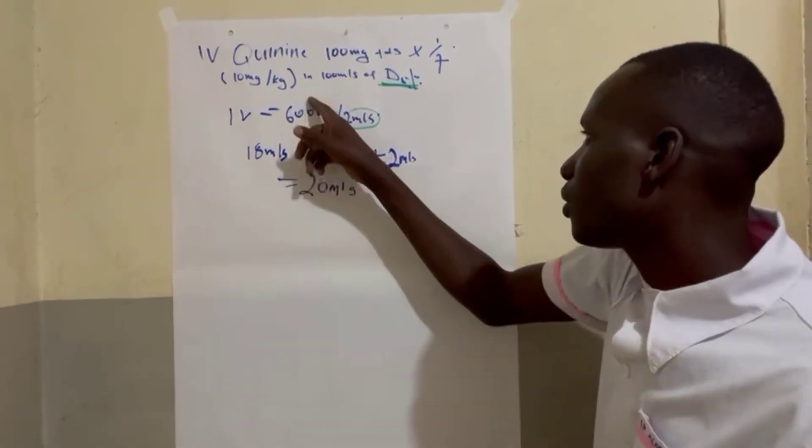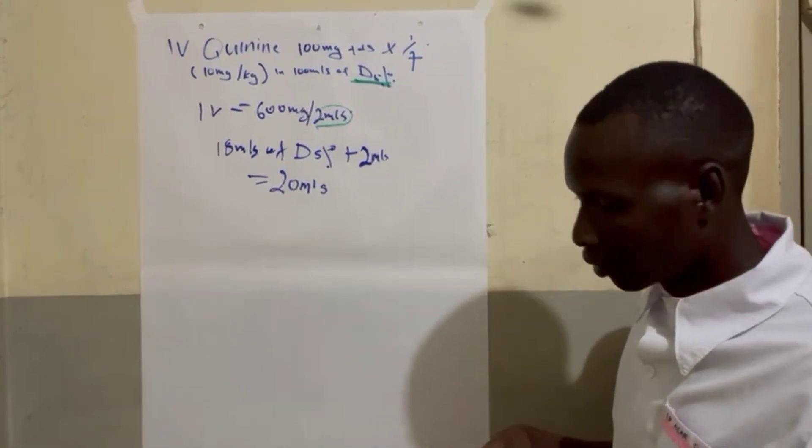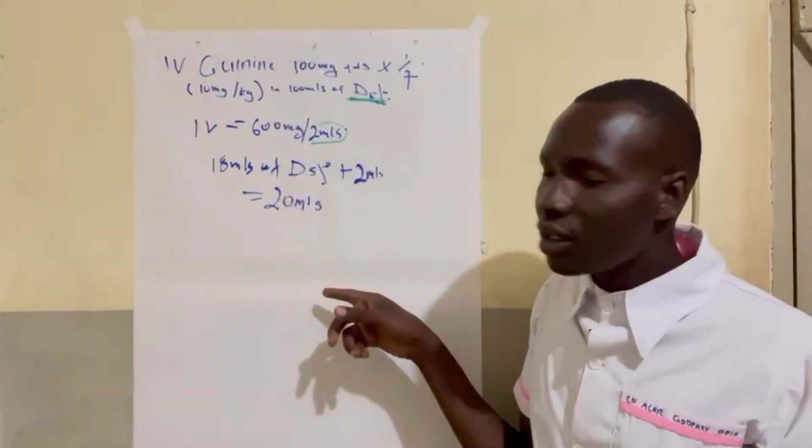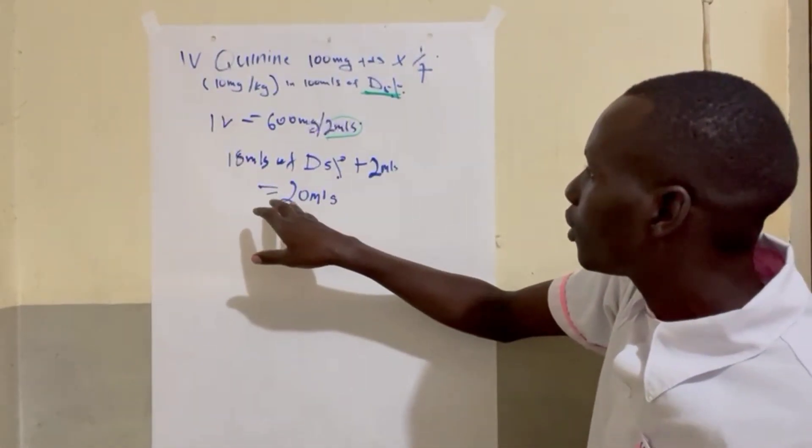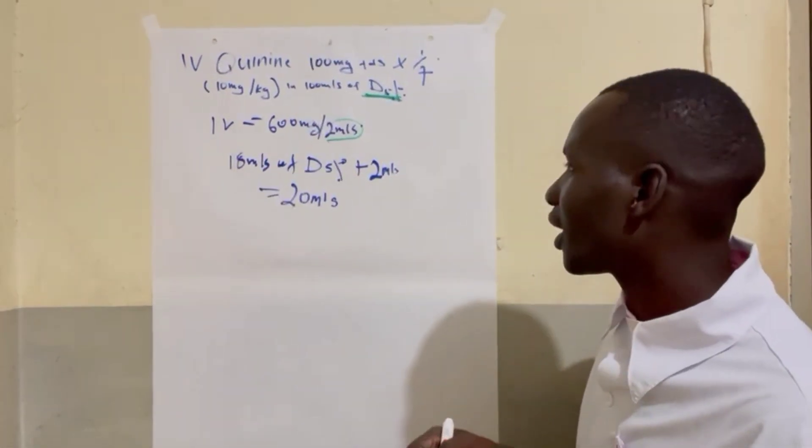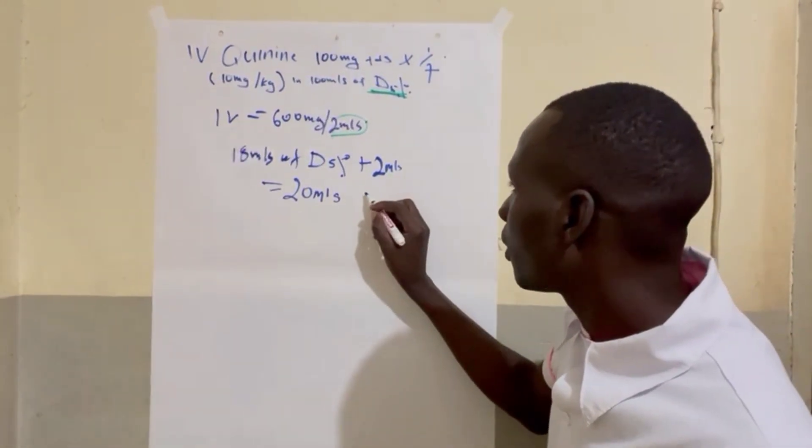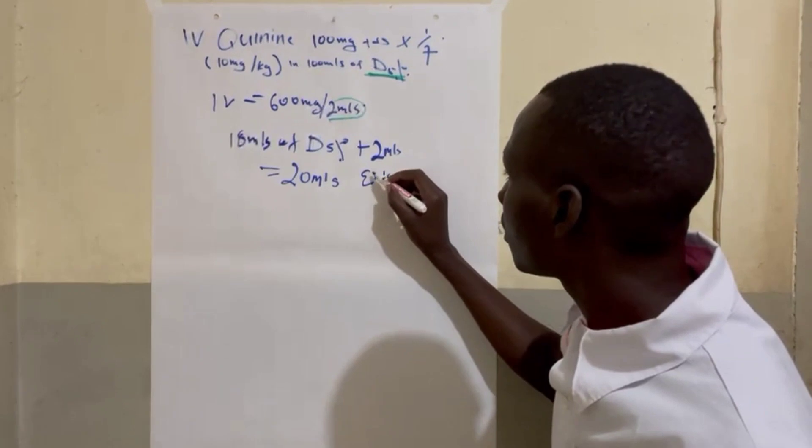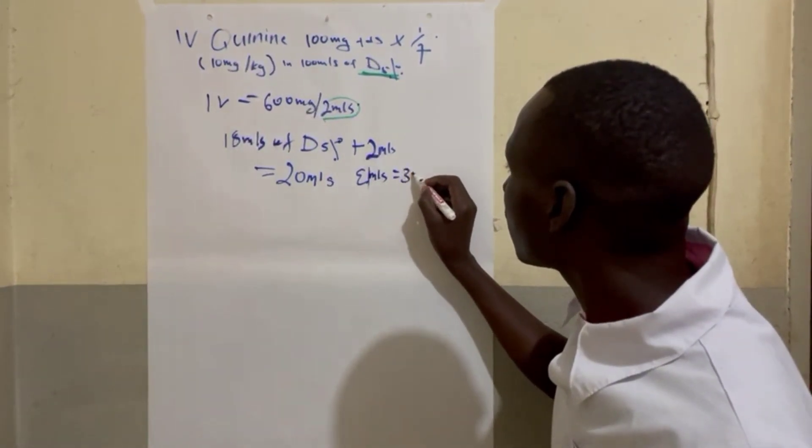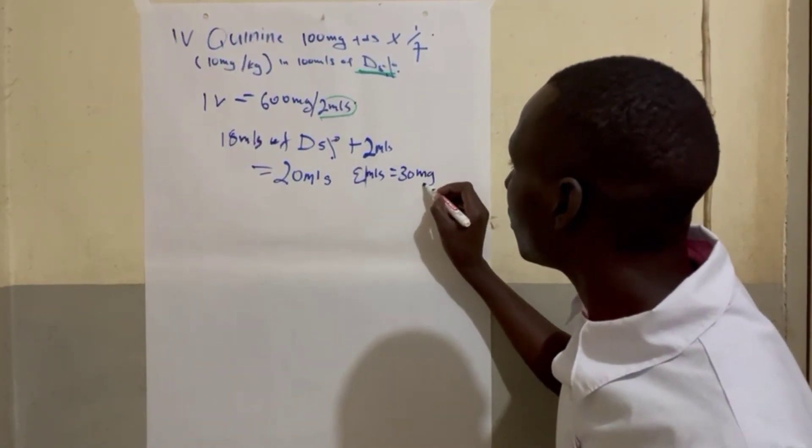If you divide this, if you divide this with the 600, which means each ml will contain 30mg, which means each ml is equal to 30mg.